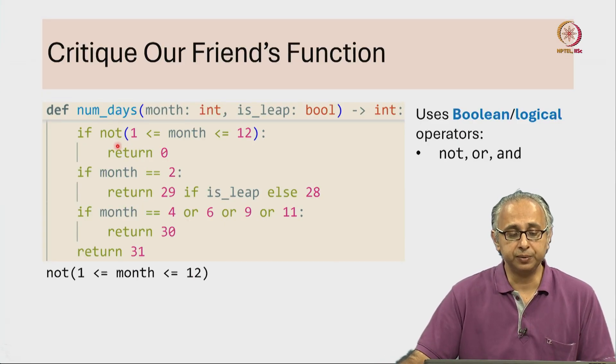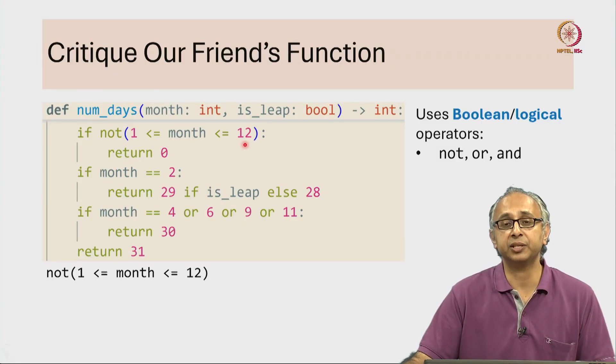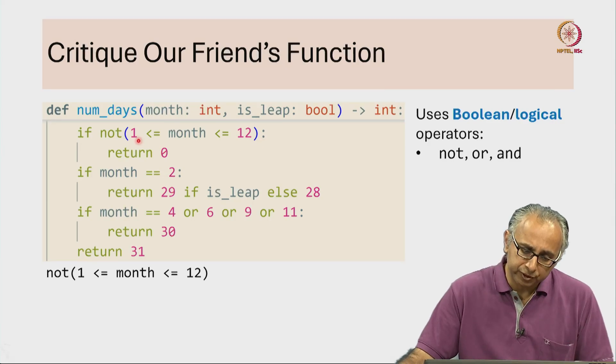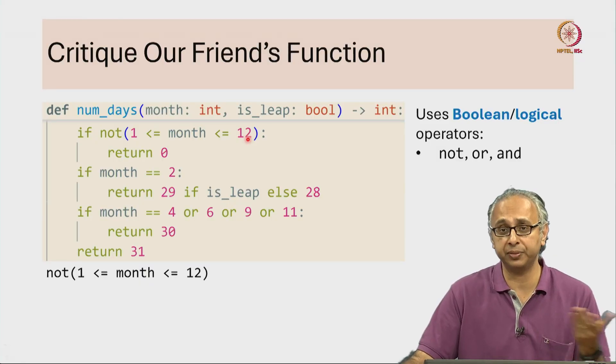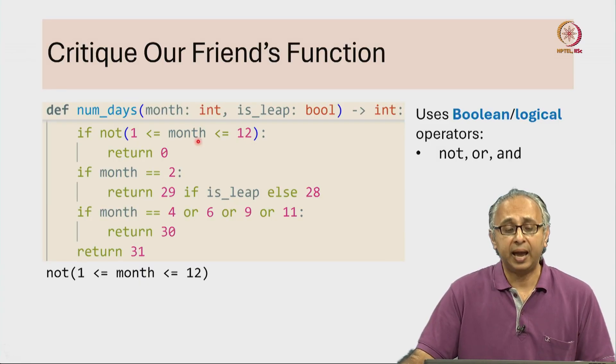So let us understand these carefully. The first condition is not 1 less than or equal to month less than or equal to 12. What does that mean? Well, it means we will first figure out what this condition is. This is either true or false - either month is between the range 1 to 12 or it is not.